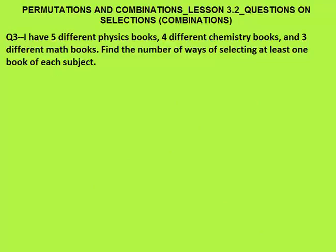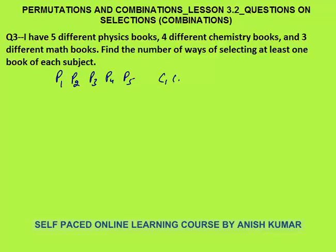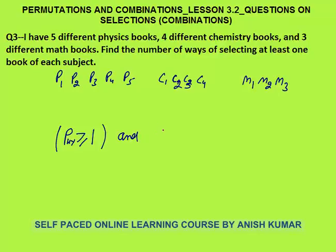Question 3: I have 5 different physics books, 4 different chemistry books, and 3 different maths books. Find the number of ways of selecting at least one book of each subject. I need to select at least one book of physics AND at least one book of chemistry AND at least one book of maths. Note that 'and' is there — not 'or' — because 'or' would make it optional, but here I must select at least one book from each and every subject.